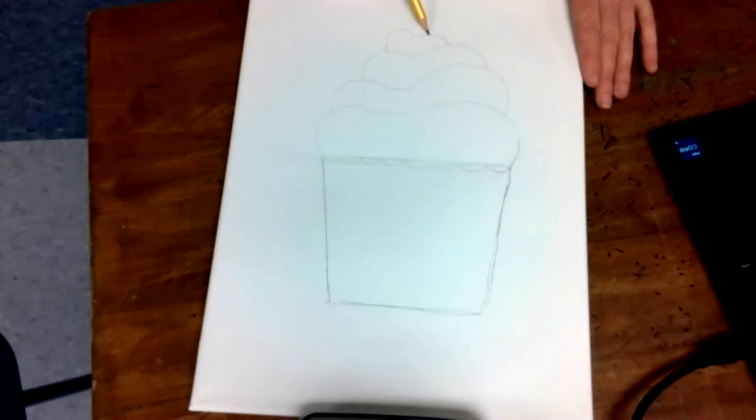If you want to add any fruit or Oreo or an M&M or a strawberry or maybe a cherry, a blueberry, whatever you want to add on top of your cupcake, you can go ahead and add that on the top.